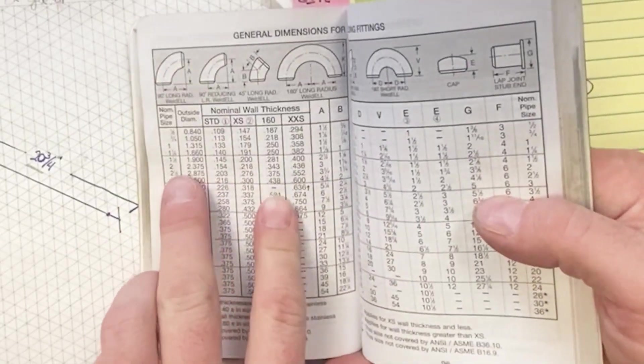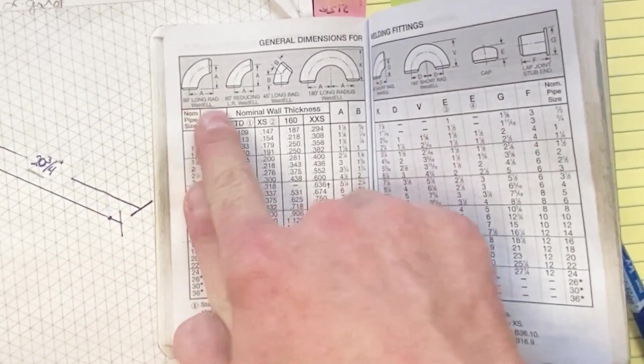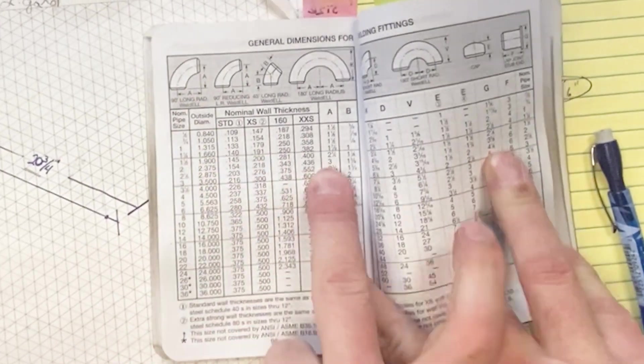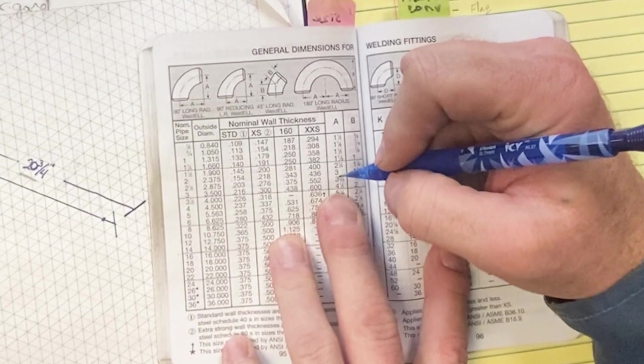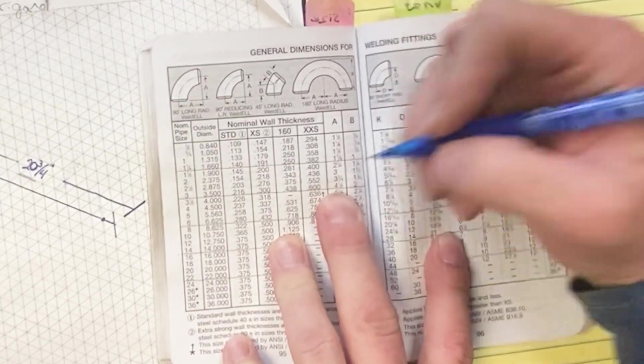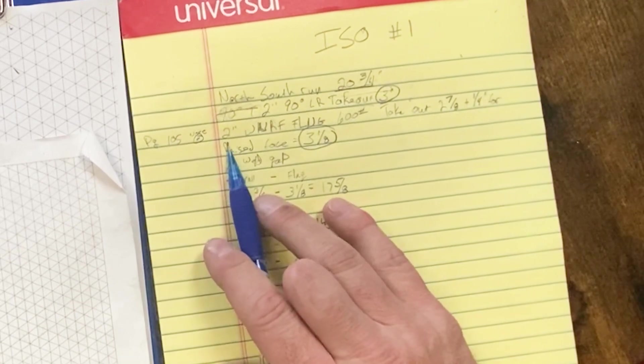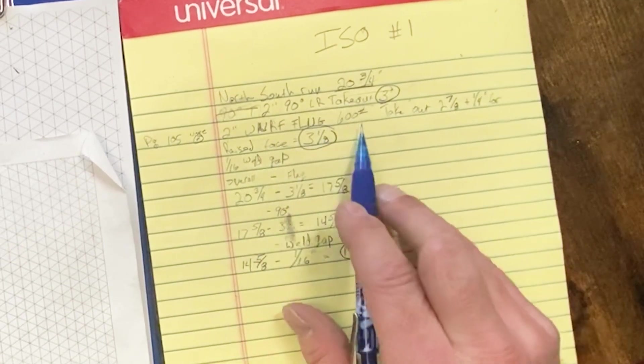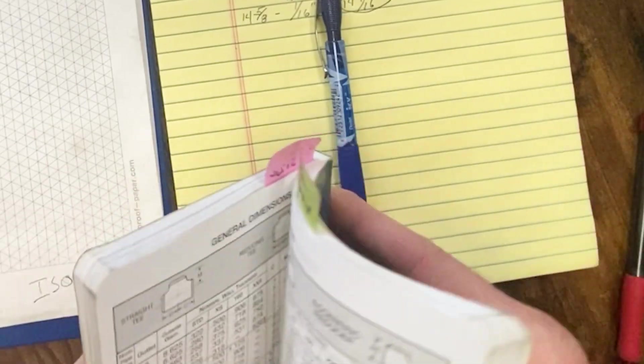Page 95, we go to 2 inch and we're looking for dimension through A, 90 degree long radius weld elbow, and we look for A, 3 inches or 1.5 times the diameter. So half of 2 inch is 1, 1 plus 2 equals 3. Then we need to take the takeout of that 2 inch raised face weld neck flange, 600 pound, and if you notice on page 105, I write all this down so I know how to find it real quick.